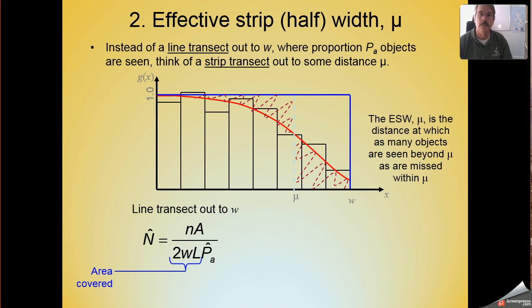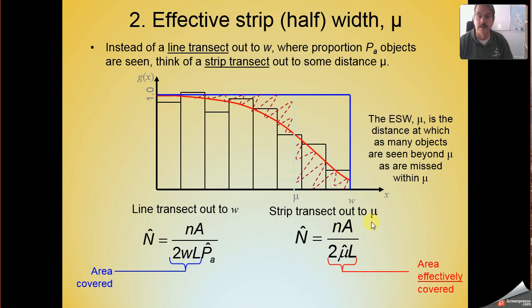And so this value mu that goes by the acronym effective strip width is this distance at which we see as many animals beyond mu as we missed inside of mu. So that allows us to convert this equation that you've seen previously that allows us to estimate abundance, given the number that we see, little n, the size of our study area.